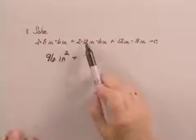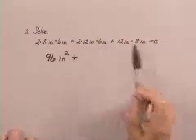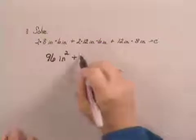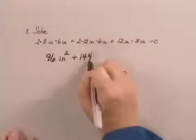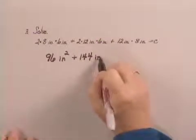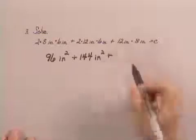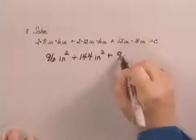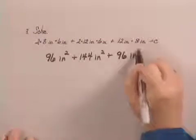Then I have 2 times 12 inches times 6 inches. So I'm multiplying 2 times 12 times 6. I get 144. Again, my unit will be square inches. And finally, I'm multiplying 12 inches times 8 inches. I get 96 square inches.